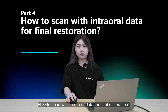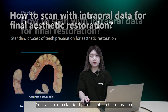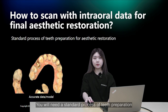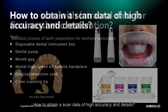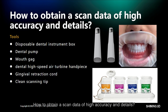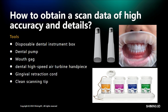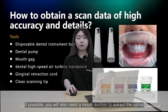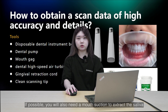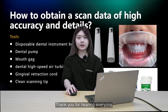How to scan with intraoral data for final restoration? You will need a standard process of teeth preparation for aesthetic restoration and need accurate data or model. The tools you will need are: a disposable dental instrument box, a dental pump, a mouth jack, a dental high-speed air turbine handpiece, gingival retraction cord, and a clean scanning tip. If possible, you will also need a mouth suction to extract the saliva. Thank you for listening, everyone.